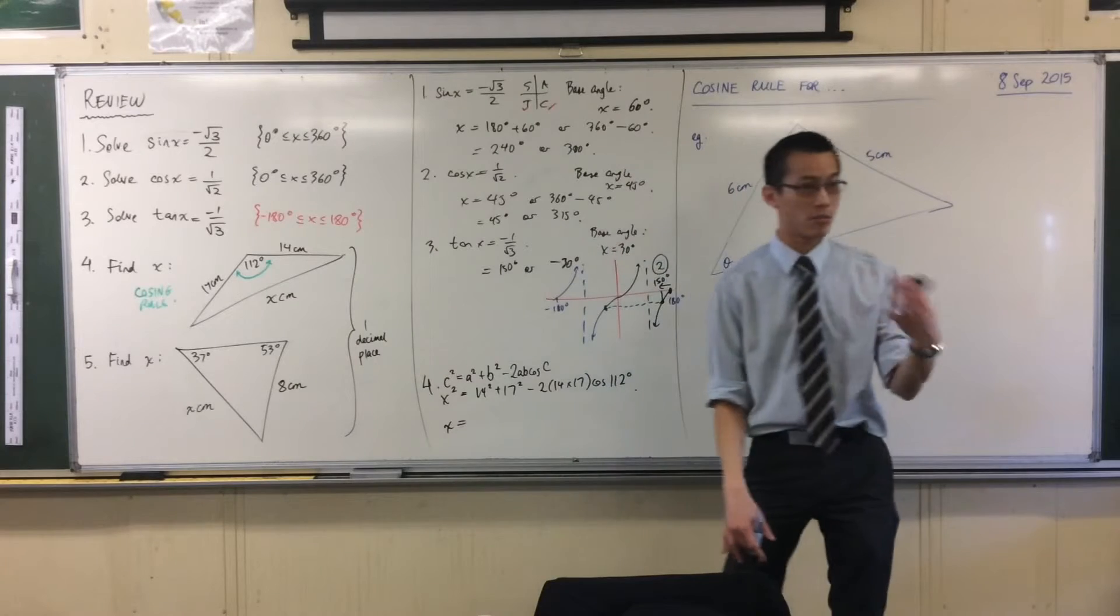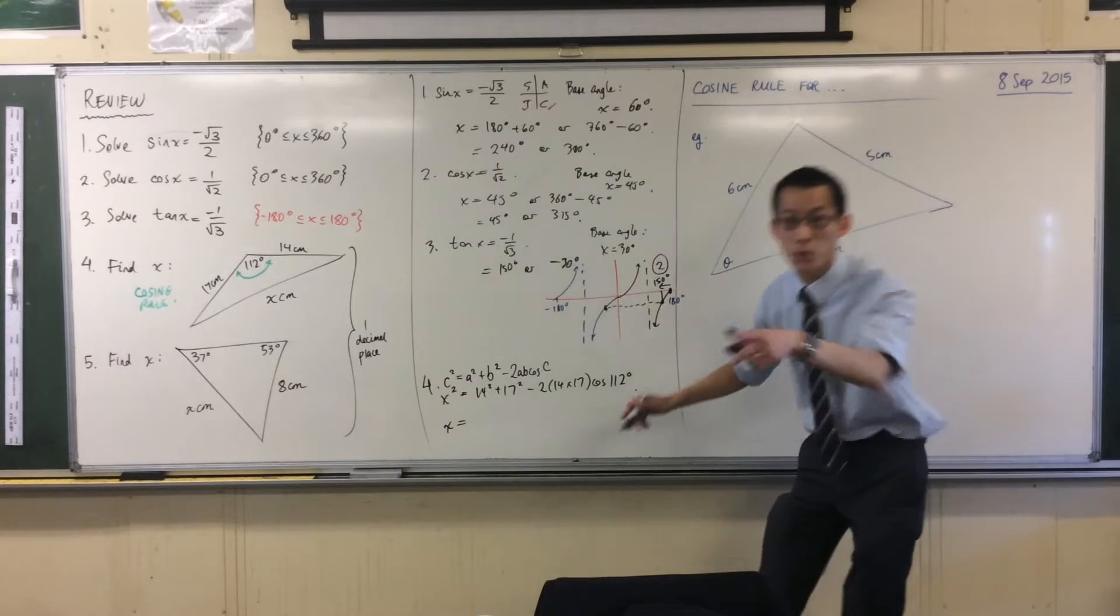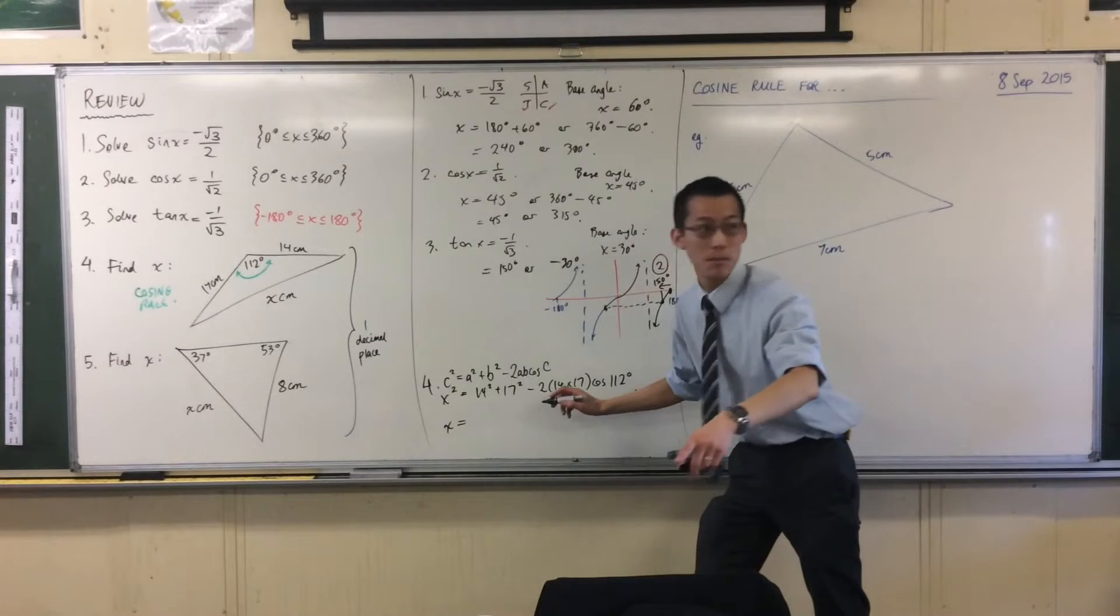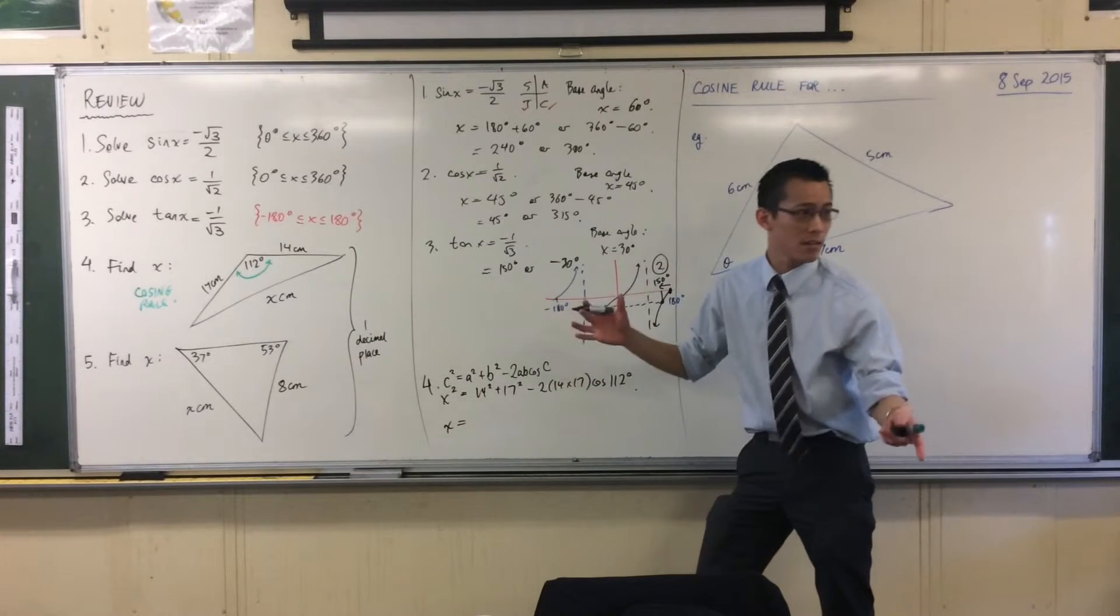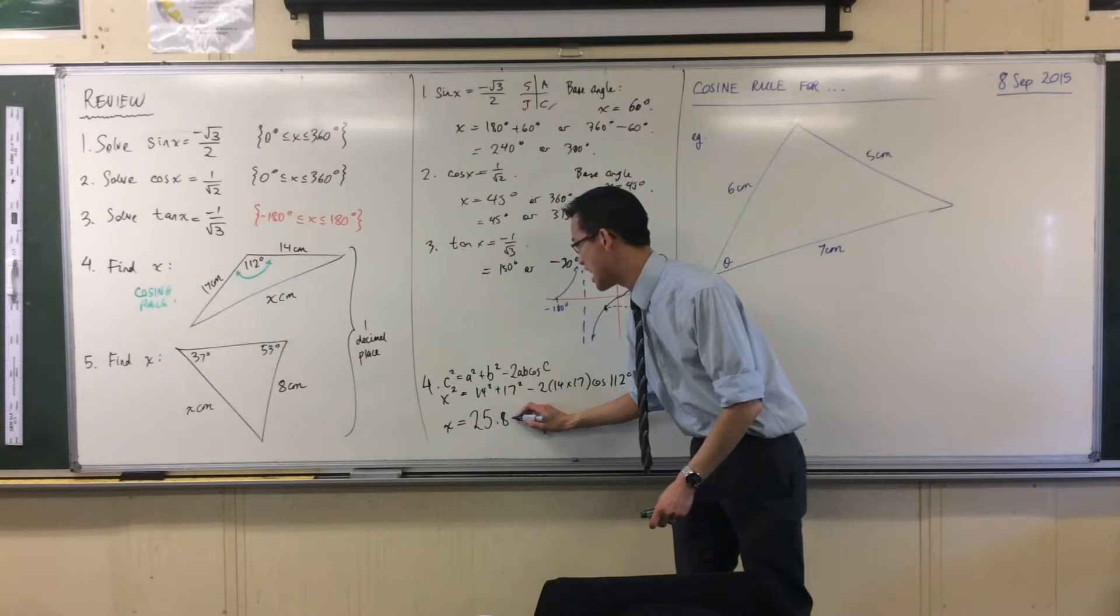x is what I want to find, so that's why it goes over there on the left. Then I fit in my other two sides and the included angle. So I've got 14 squared, 17 squared, minus 2 times 14 by 17 cos 112. There's some calculator work you're going to have to do in there. You're going to evaluate it, you're going to take the square root. Has someone got the answer to one decimal place already? 25.8.